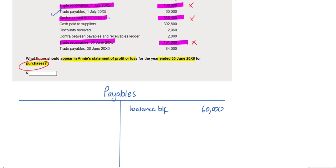Next in the list we have information about cash paid to suppliers. This will reduce the balance outstanding to our suppliers so we can put this on the debit side. We then have discounts received. Discounts received will also reduce the balance outstanding to suppliers, so we'll put this on the debit side.